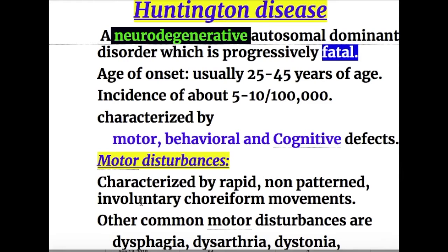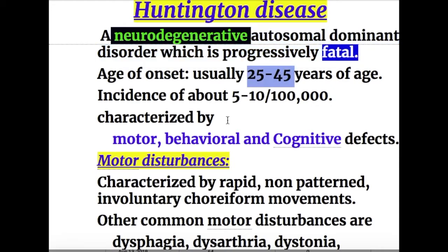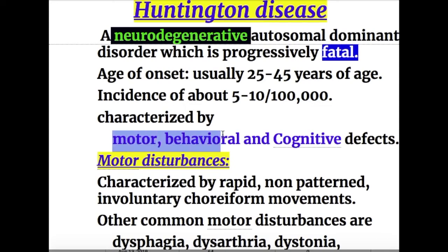Huntington disease or Huntington Chorea is a neurodegenerative autosomal dominant disorder which is progressively fatal. The age of onset is usually between 25 to 40 years of age and the incidence of the disease is about 5 to 10 per 100,000. It is characterized by motor, behavioral, and cognitive defects.